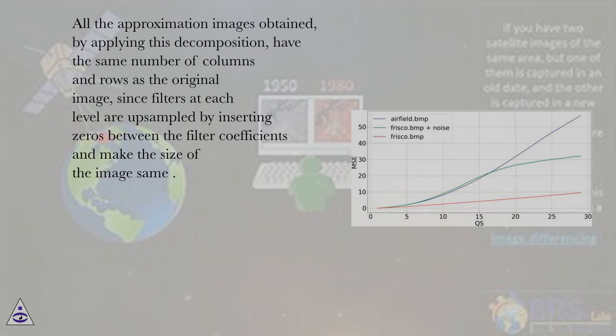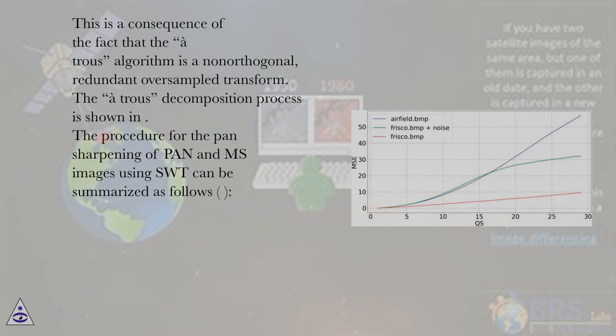Since filters at each level are upsampled by inserting zeros between the filter coefficients and make the size of the image same, this is a consequence of the fact that the à trous algorithm is a non-orthogonal, redundant, oversampled transform.